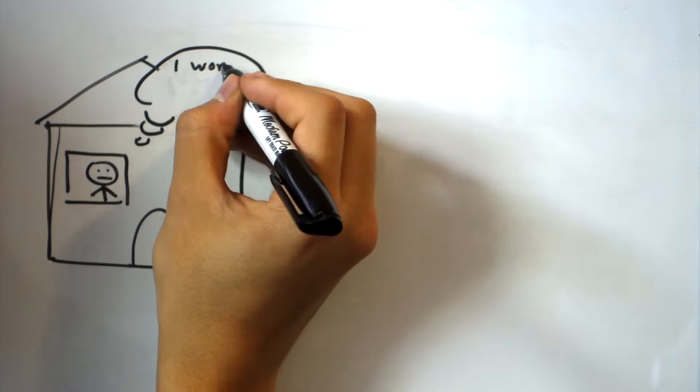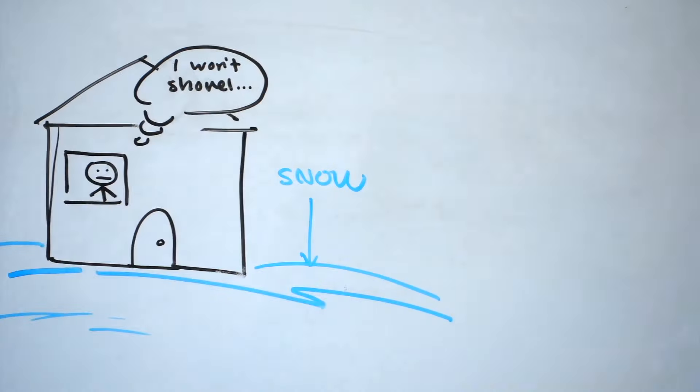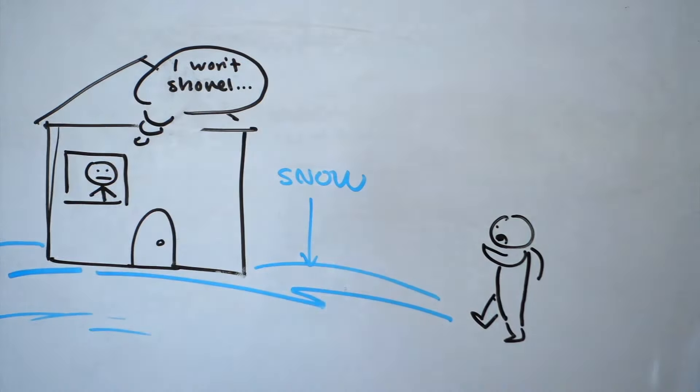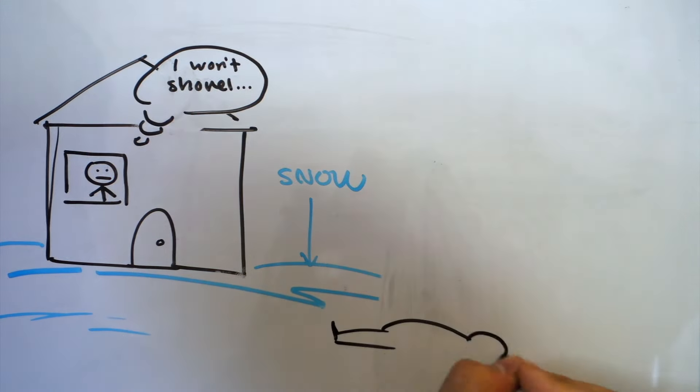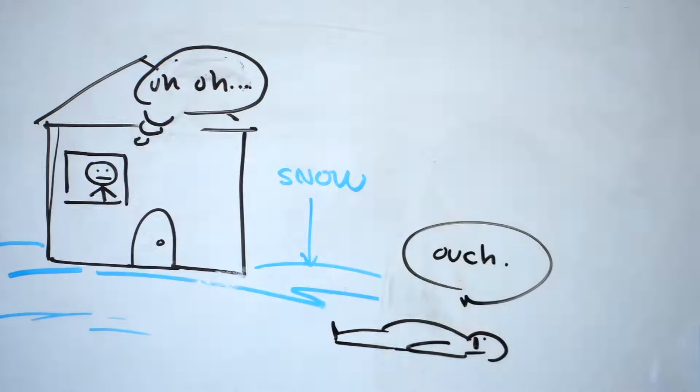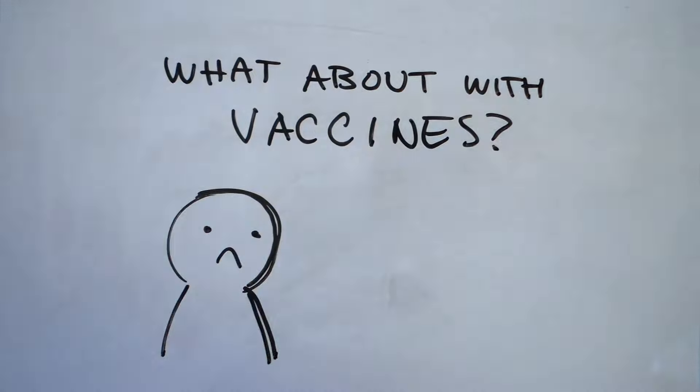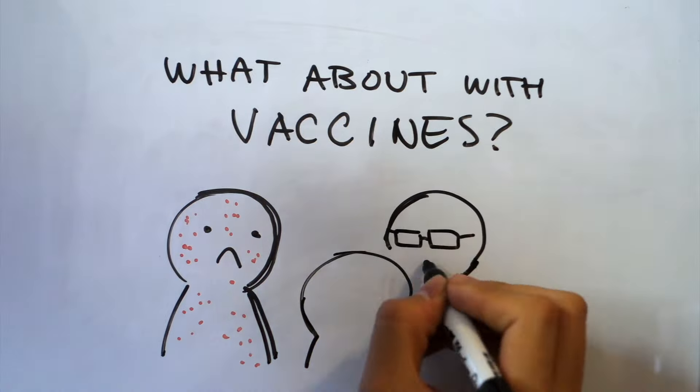Rhode Island gets pretty cold in the winter. Snow starts falling in November and pretty much doesn't disappear until March. One day, I choose not to shovel the snow from my sidewalk. If you walk past my house and fall, it's now my fault. I'm liable and have to pay. Why should failing to vaccinate your children or yourself be any different?